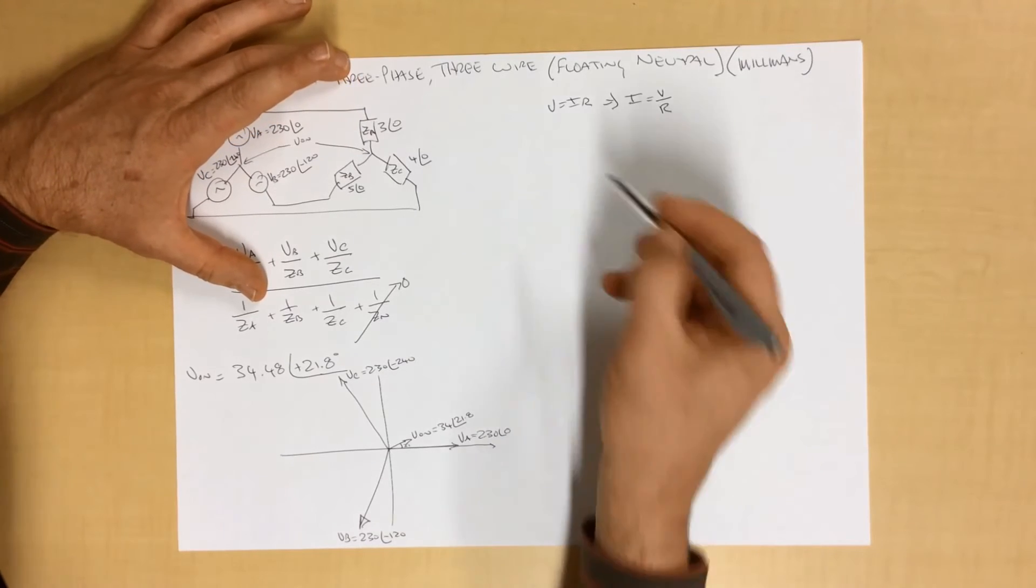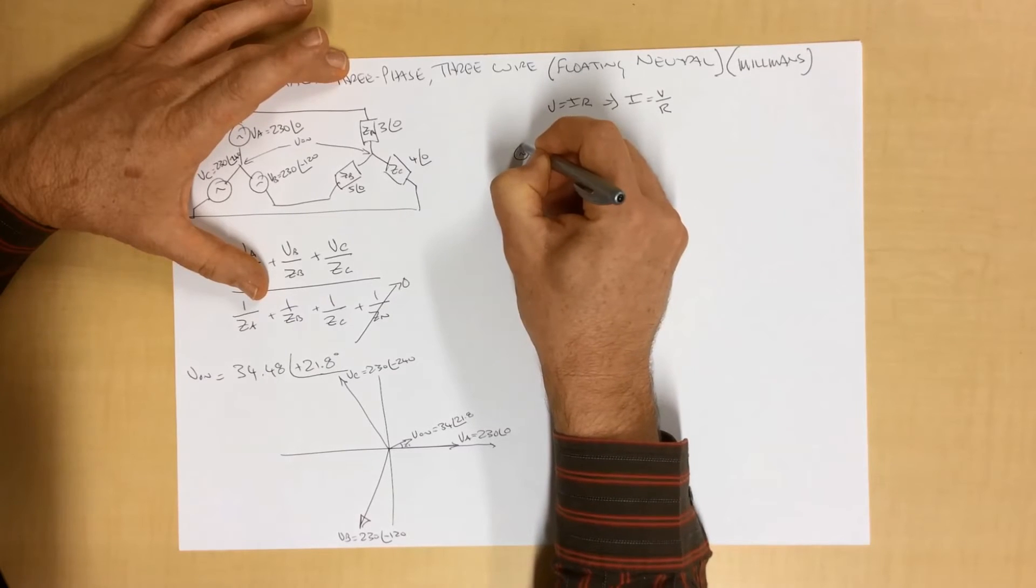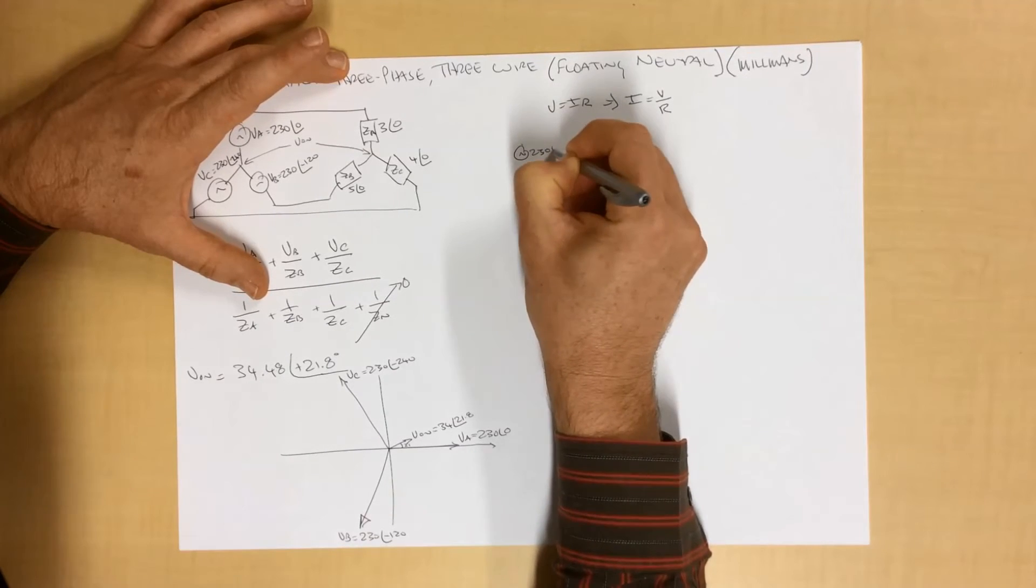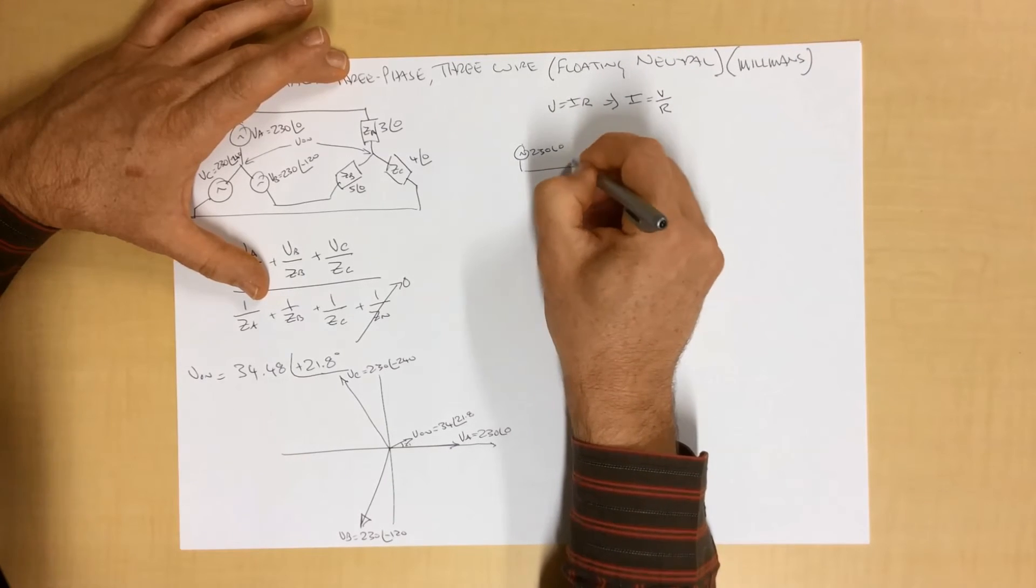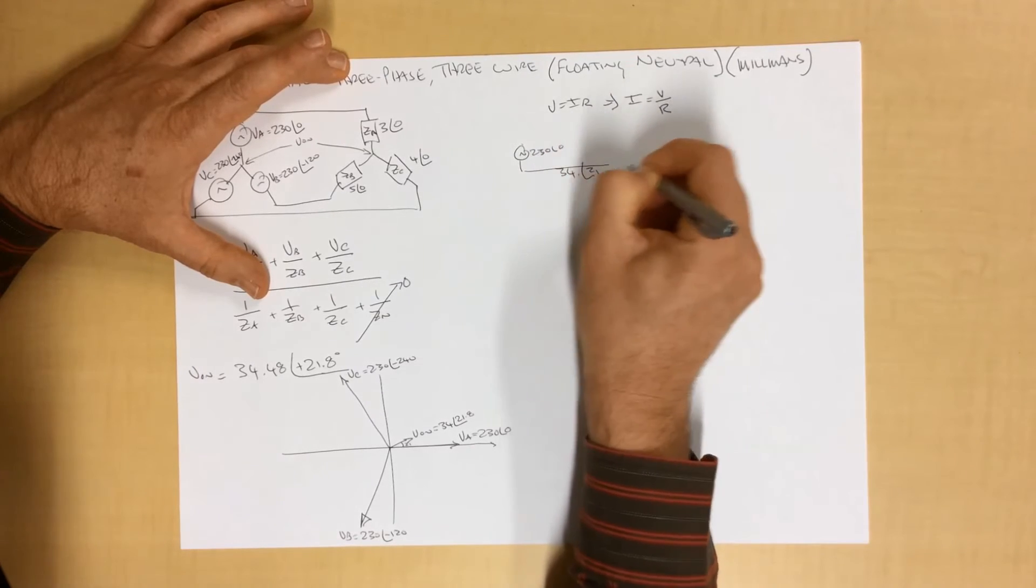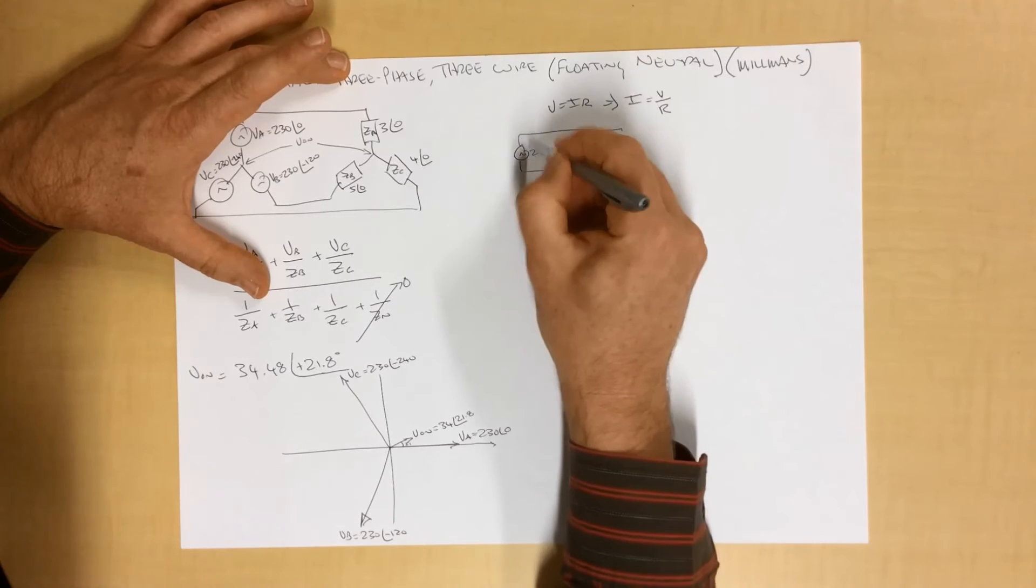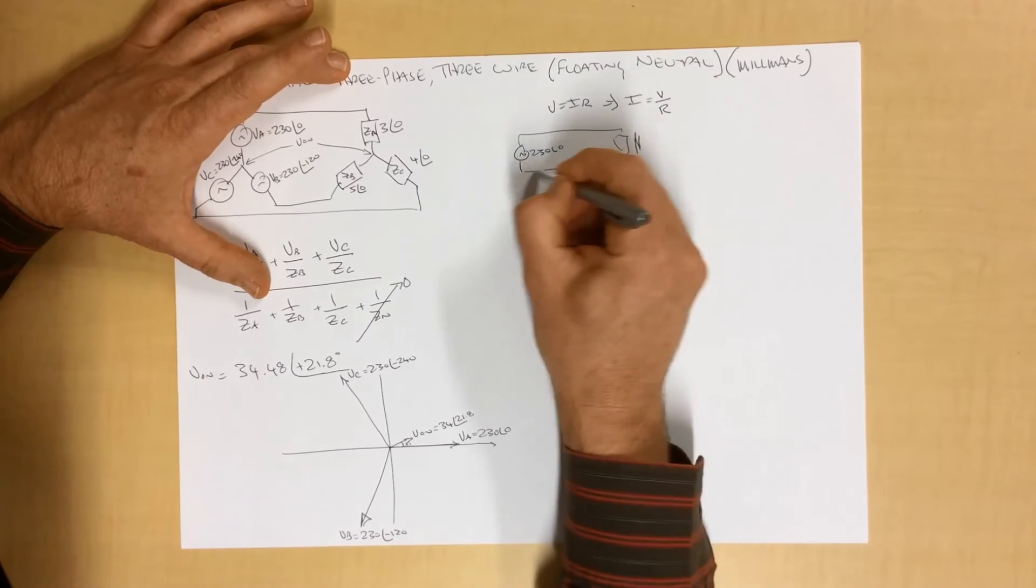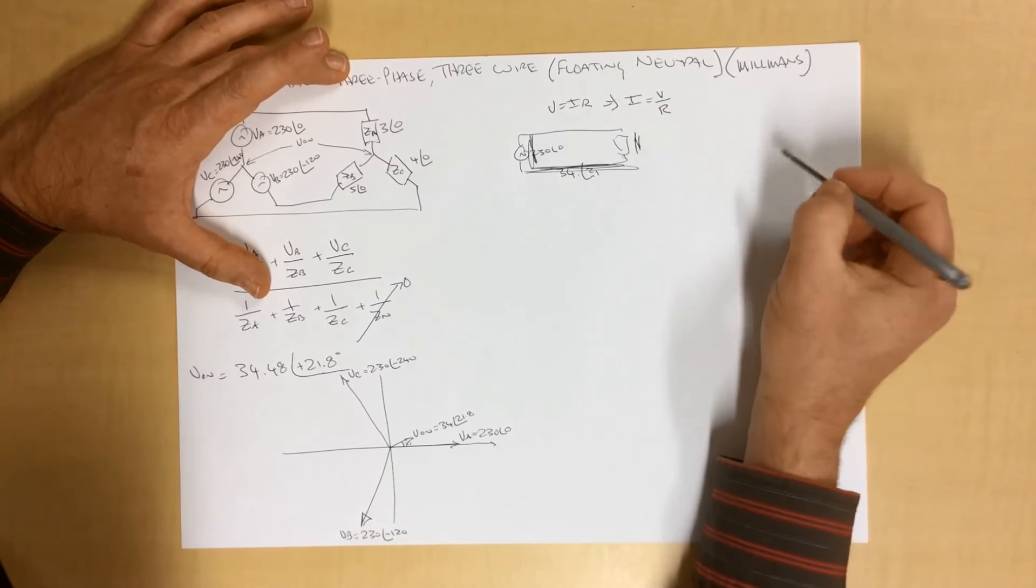So we can see, I'll write it out a little bit clearer. We've got a supply here of 230 at an angle of zero. We've got a potential difference here, which is 34 at 21, and our load here. So the voltage across here must be the difference between this voltage and this voltage. It's only plausible.